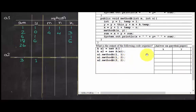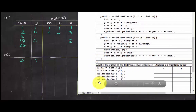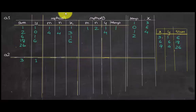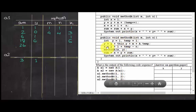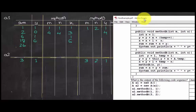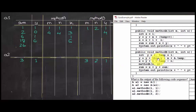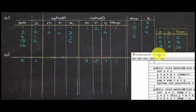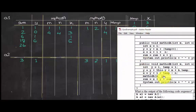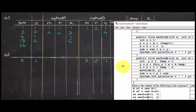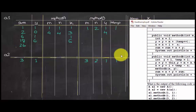Now we move to the last method call: a2.methodB with 3 and 2 passed, so m equals 3, n equals 2. Using a2's table: y is 1, temp is 1. Y equals y plus this.y: y is 1, this.y (global) is 1, plus temp (2), plus m (3): 1 plus 1 is 2, plus 2 is 4, plus 3 is 7. So y equals 7.